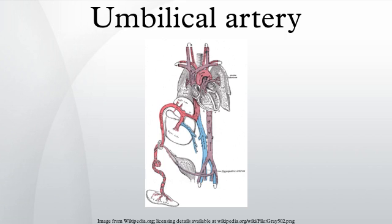The umbilical arteries supply deoxygenated blood from the fetus to the placenta. There are usually two umbilical arteries present together with one umbilical vein in the umbilical cord. The umbilical arteries surround the urinary bladder and then carry all the deoxygenated blood out of the fetus through the umbilical cord.